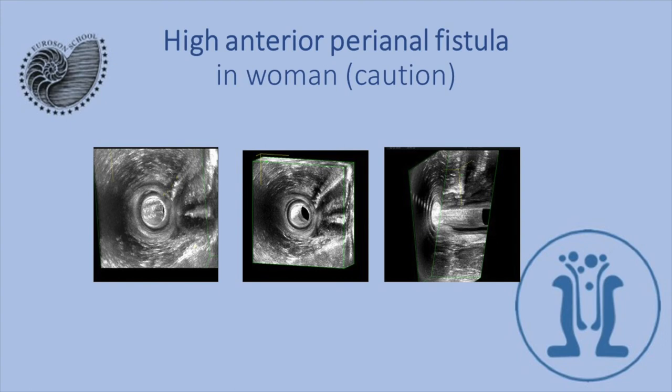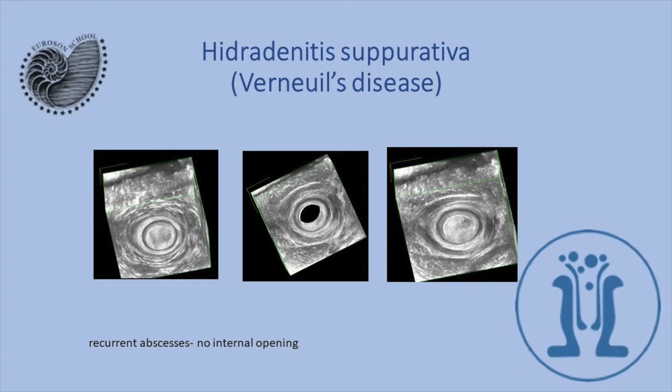Here we have a patient with hidradenitis suppurativa — Verneuil's disease. This is a disease of the skin causing perianal abscesses. Here we see that there is no internal opening; the abscesses are caused by Verneuil's disease itself.